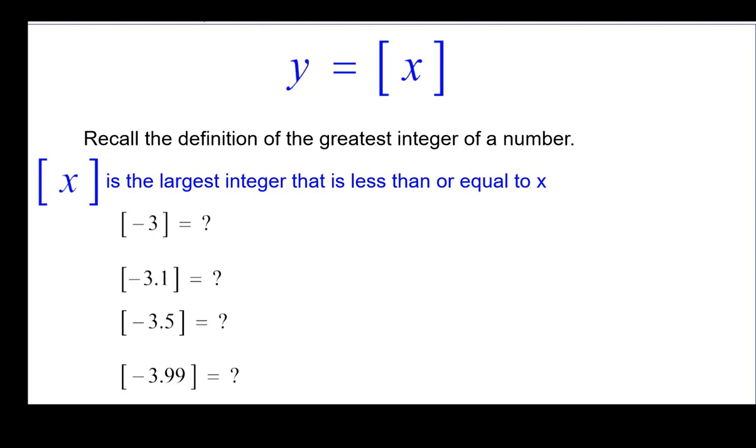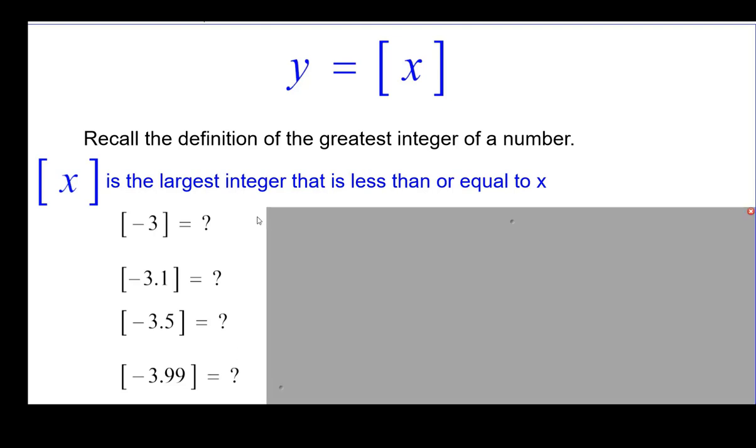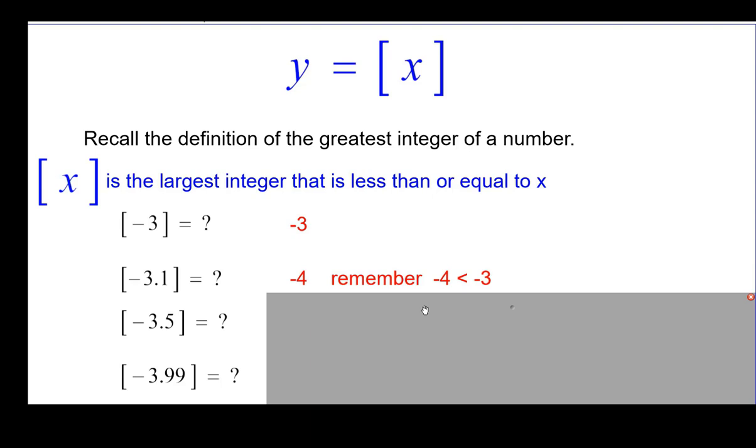Let's look at some negative numbers. This may surprise you here, so be careful. What is the largest integer that is less than or equal to negative 3? Hopefully said negative 3. Now negative 3.1, it's the largest integer that is less than or equal to negative 3.1. The answer is negative 4, because remember that negative 4 is smaller than negative 3. We want one that's less than or equal to this number, and negative 3 would be too big. And that's the part where people get confused. So think about that. You may need to pause to think about it. What about the greatest integer of negative 3.5? Also negative 4. Negative 3.99, also negative 4. Think about that.